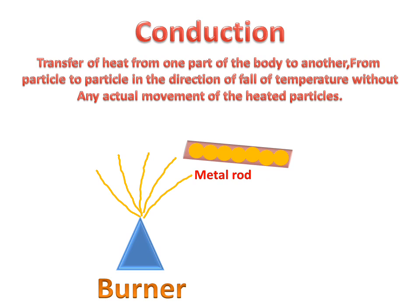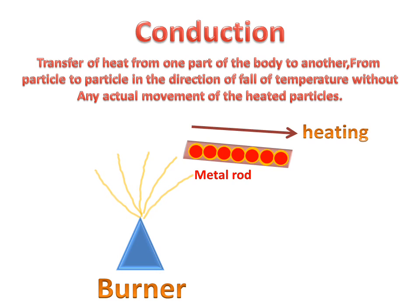See the example: when a burner gives heat to the metal rod, these particles will start heating, and each particle will transfer heat to the next particle without changing its own position. The heat travels from the first point to the last point. This is conduction.